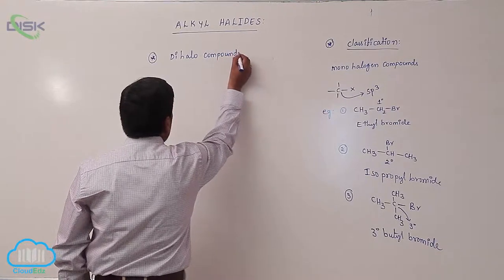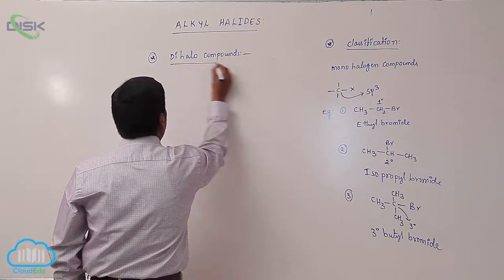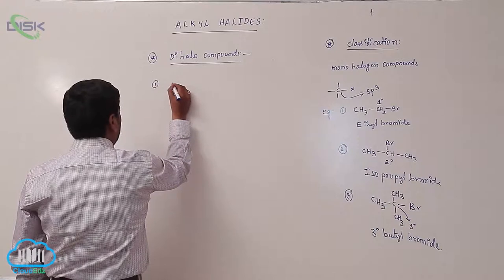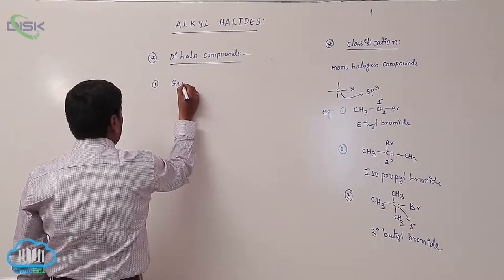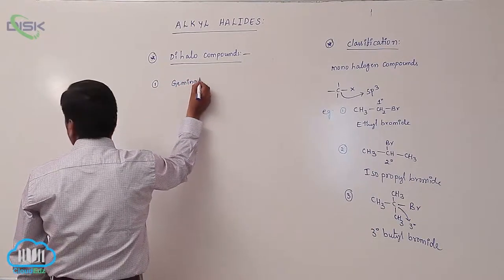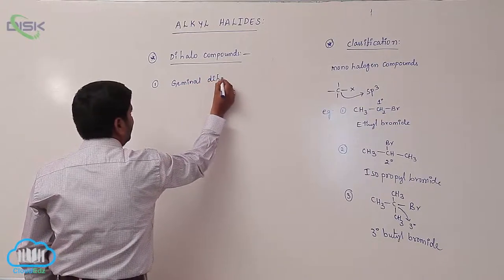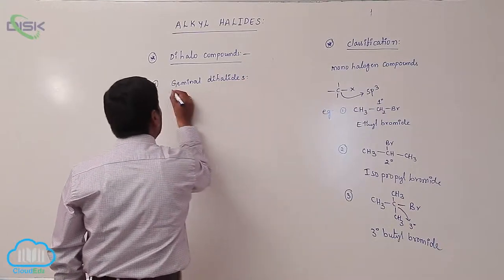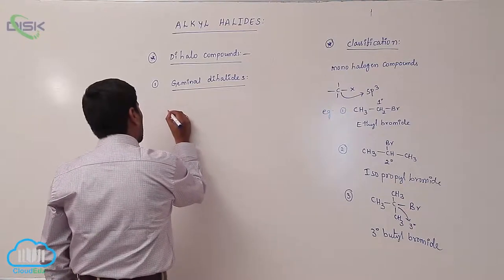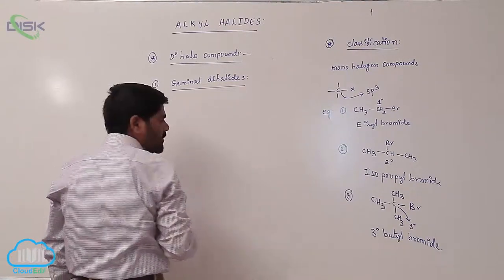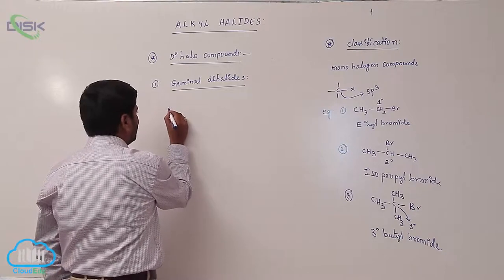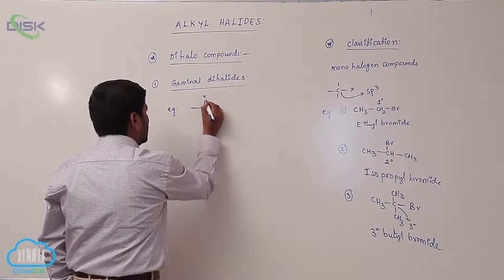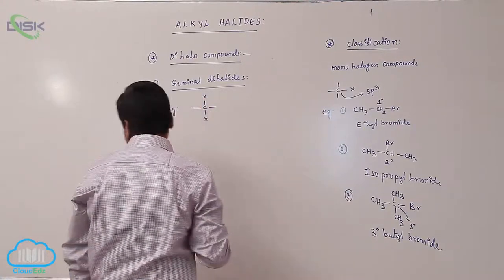Dihalo compounds. Number one is geminal dihalide. If two halogens are present on the same carbon, it is known as geminal dihalides.